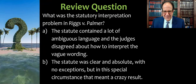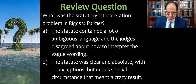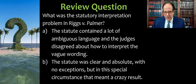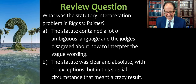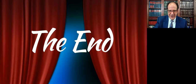Here's a review question to see if you've been paying attention. What was the statutory interpretation problem in Riggs v. Palmer? A: the statute contained a lot of ambiguous language and the judges disagreed about how to interpret the vague wording. Or B: the statute was clear and absolute with no exceptions, but in this special circumstance, that meant a crazy result. Hopefully you know the answer — if not, go back and rewatch this video. That concludes our lecture about Riggs v. Palmer.